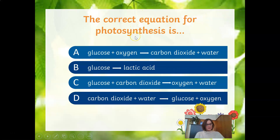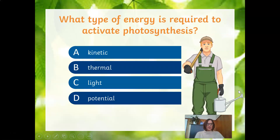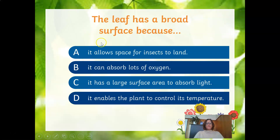The correct equation for photosynthesis — is it glucose plus oxygen gives carbon dioxide and water; glucose gives lactic acid; glucose plus carbon dioxide gives oxygen and water; or carbon dioxide plus water gives glucose and oxygen? The answer is D: carbon dioxide plus water gives you glucose and oxygen. What type of energy is required to activate photosynthesis — kinetic energy, thermal energy, light energy, or potential energy? Obviously, light energy. The leaf has a broad surface because — it has space for insects to land, it can absorb lots of oxygen, it has a large surface area to absorb the light, or it enables the plant to control its temperature? The correct answer is: it has a large surface area to absorb the light.